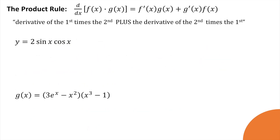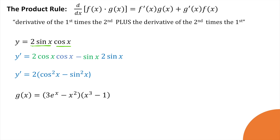Let's try it with some trig functions. The process is the same. The derivative equals the derivative of the first — the derivative of sine is cosine, so the derivative of 2 sine is 2 cosine — times the second, plus the derivative of the second. Remember: the derivative of cosine x is negative sine x, so we're subtracting sine of x times the first. If you clean that up, it would look like 2 times the quantity cosine squared minus sine squared.